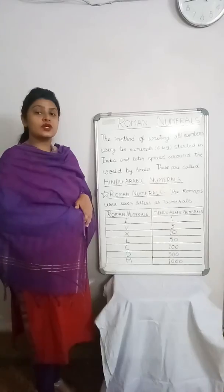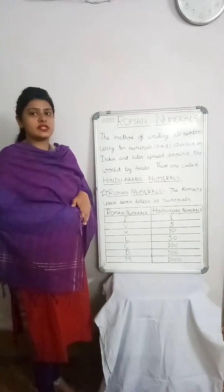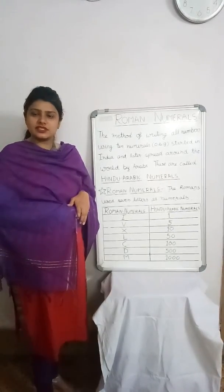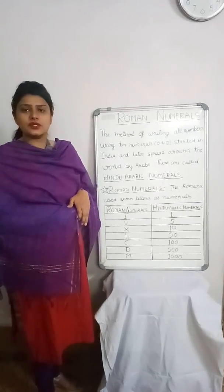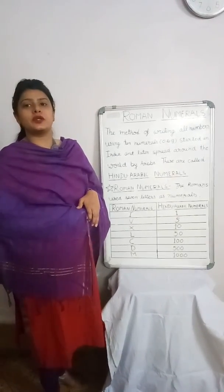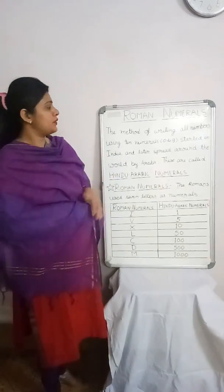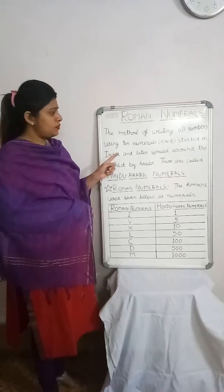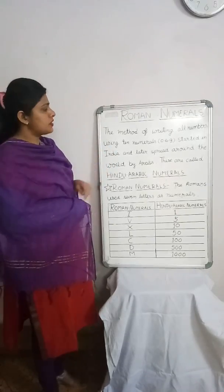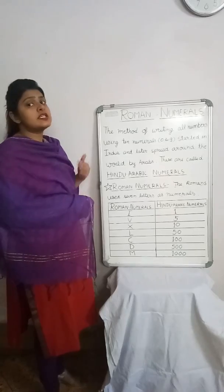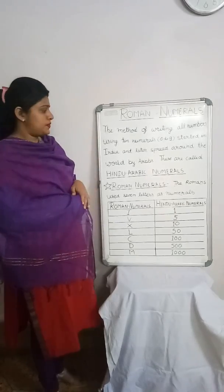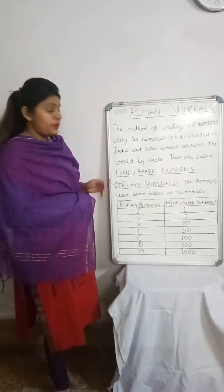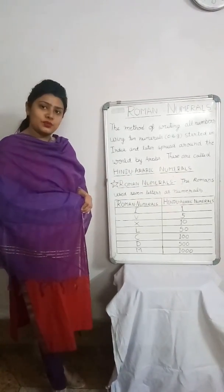Today we are going to start with Roman numerals. Do you know what Roman numerals are? To get an answer to this, first we should know what Hindu-Arabic numerals are. The method of writing all numbers using 10 numerals — that is, 0 to 9 — started in India and then spread around the world by Arabs. These are called Hindu-Arabic numerals. Now we are going to start with Roman numerals.